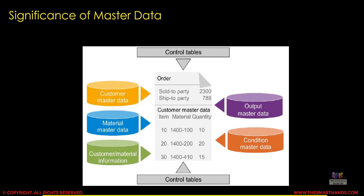When we create any sales transaction — a sales order, sales contract, or sales quotation — and we enter the customer code, the system will pull up all the details from the customer master data, also known as business partner master data, that is already maintained in the system. Similarly for material master data, we only enter the material code and the system copies details like net weight, units of measure, and gross weight from the material master.